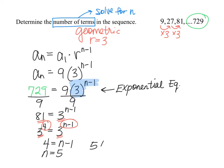This tells us that there are a total of five terms in this sequence, which we could certainly validate by just multiplying by 3 repetitively.